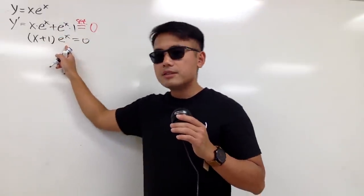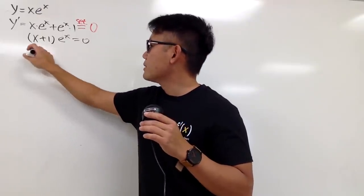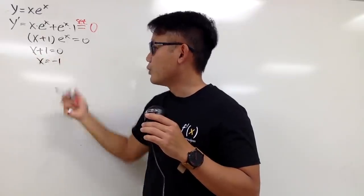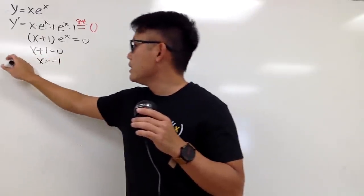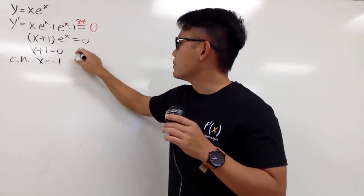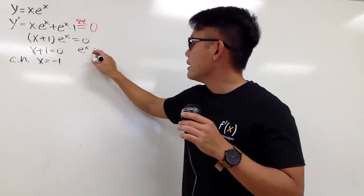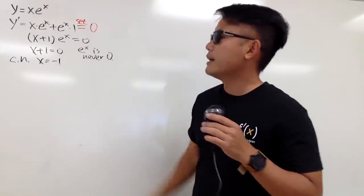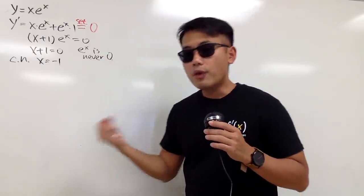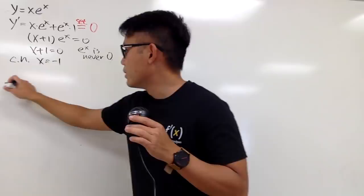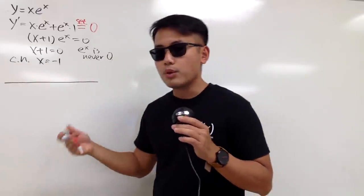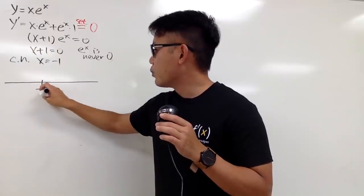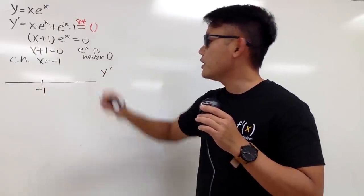The e to the x factor is never 0, so we just need to worry about x + 1 = 0, namely x = negative 1. This is our only critical number. I'll indicate that e to the x is never 0. From here, we can do a sign chart — I'll mark it at negative 1 for the first derivative.